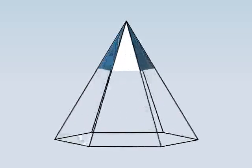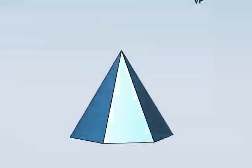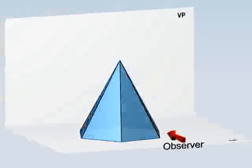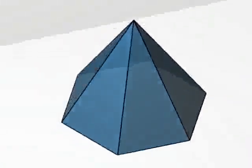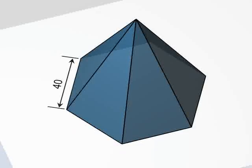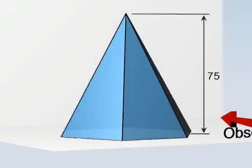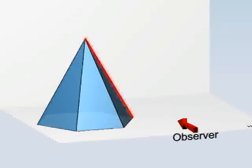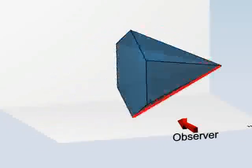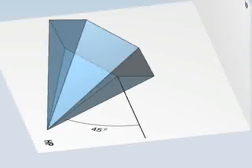Now we will turn to another problem. The problem is to generate the projections of the hexagonal pyramid which is 40 mm in base. The axis length is 75 mm and it has a slant edge on the ground making an angle of 45 degrees with XY.